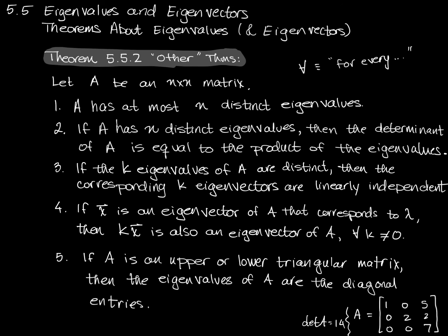So that's our last of the five theorems. If A is a triangular matrix, you can find its eigenvalues just by taking the diagonal entries. Just a quick note at the end: there is not going to be a video for the last subsection of this section, which is called 'Eigenvalues and Eigenvectors of Linear Transformations,' because we have not discussed linear transformations. So for Section 5.5, we are finished.